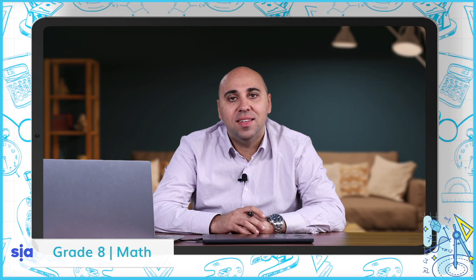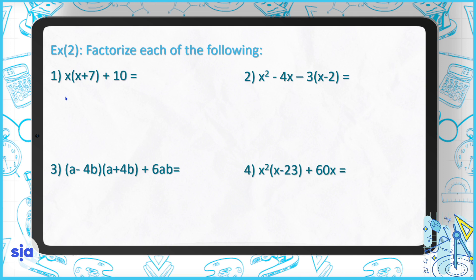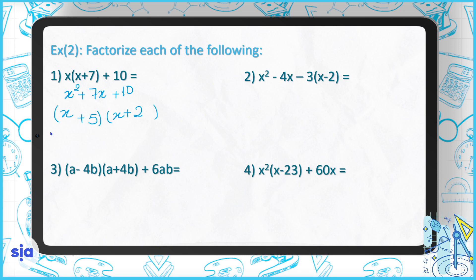Let's now go to another type, seen in exercise number two. If you have it given like this, you have to expand the brackets first, so it would be x squared plus 7x plus 10. Now make your two brackets — since we don't have a highest common factor for the three terms, it's x and x, plus 5 and plus 2. So the two brackets are x plus 5 and x plus 2.